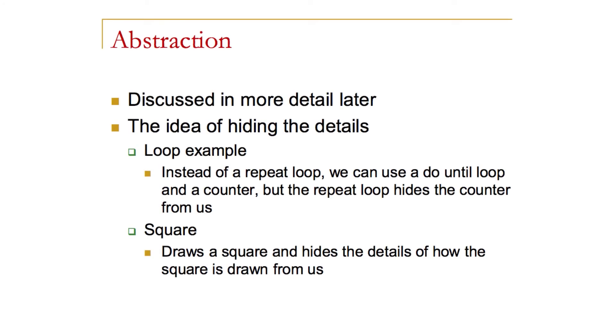The idea of abstraction will be discussed in much more detail in later lessons. In this case, we're looking at procedural abstraction. For example, when we use a repeat loop, we could write the same kind of loop as a do-until but would have to keep count of a specific variable. The repeat loop abstracts that for us. Similarly, with the square example, we abstracted out the essential characteristics of a shape — the number of sides and the size of each side — making a much more reusable block.